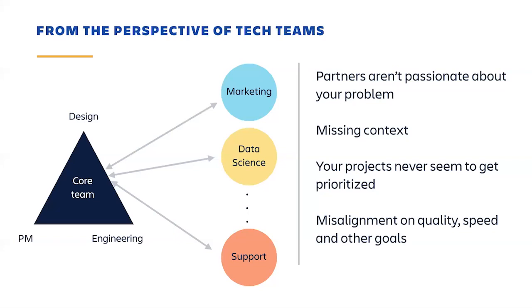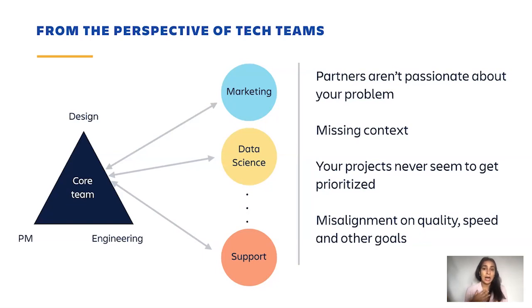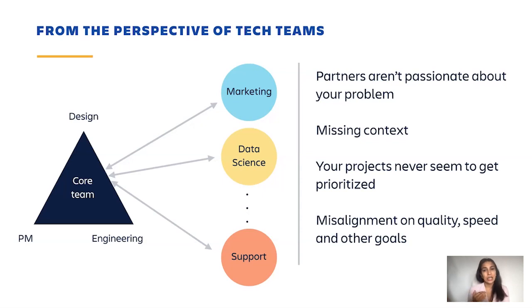I'm going to start with the pain points. I'm a product manager, so I'm in a tech team. Our core teams typically include product, design, and engineering, and we partner with cross-functional partners like marketing, data science, and support. Very commonly, pain points from the core team's perspective include: your cross-functional partners don't seem as passionate about your problem, they're sometimes missing context, your project never seems to get prioritized, and people aren't aligned on what you're trying to achieve, what the goal is, or what the timeline is.